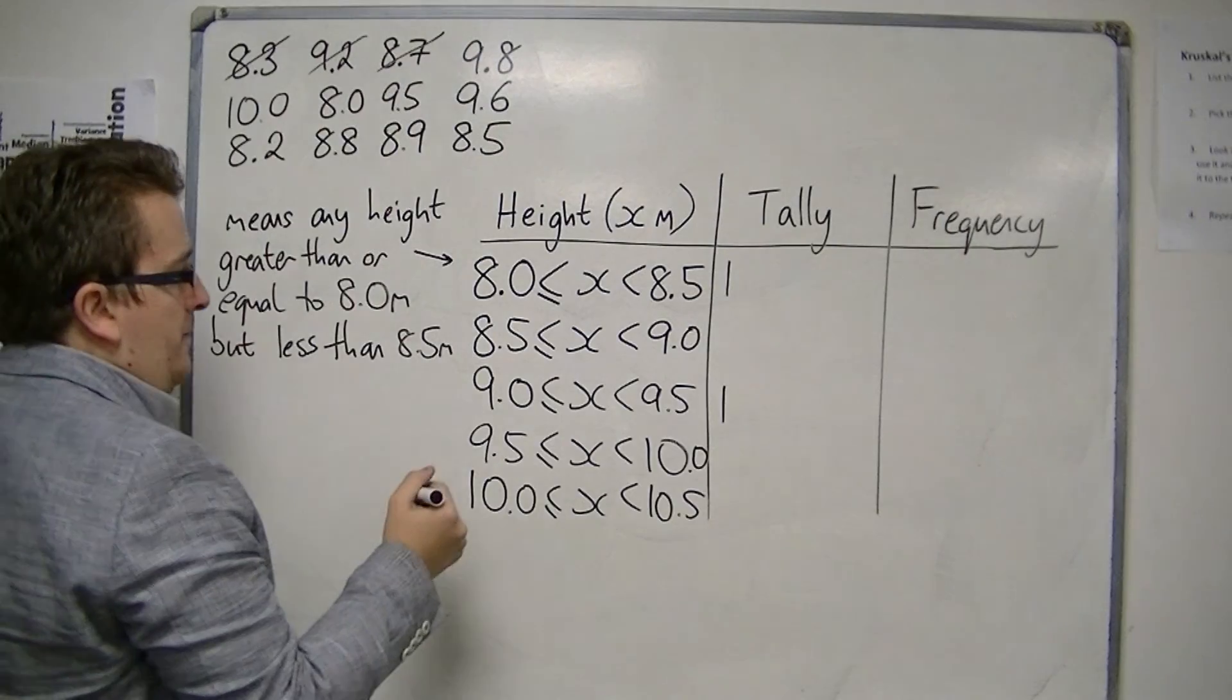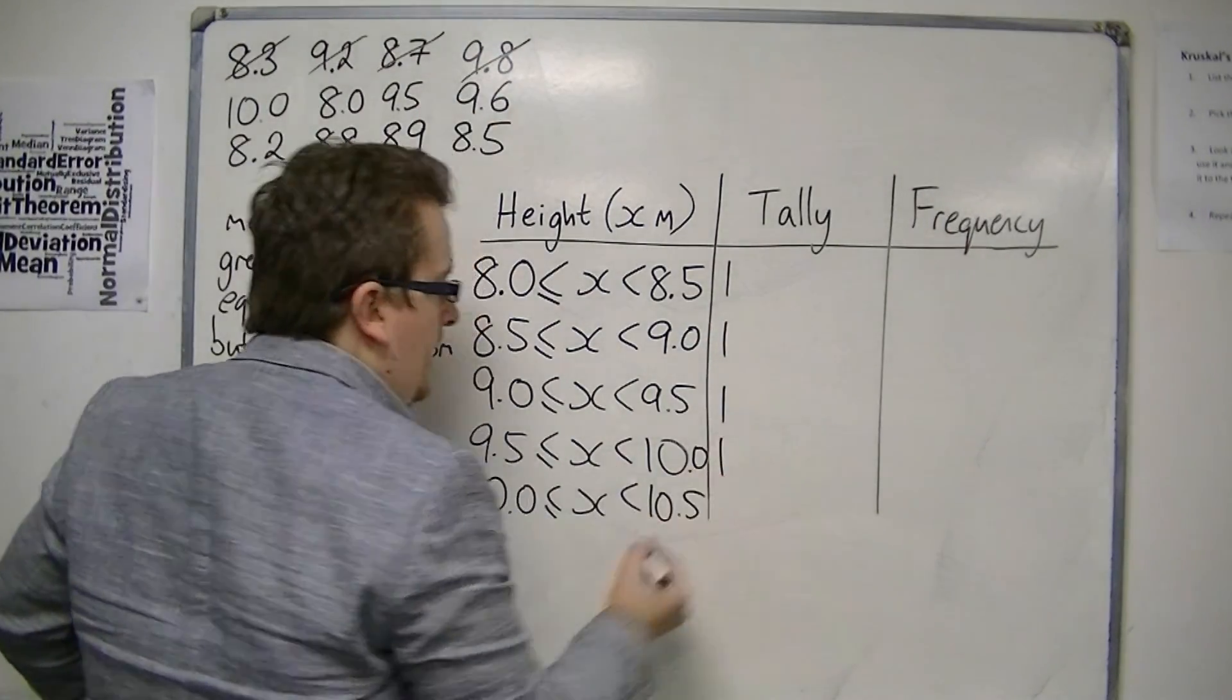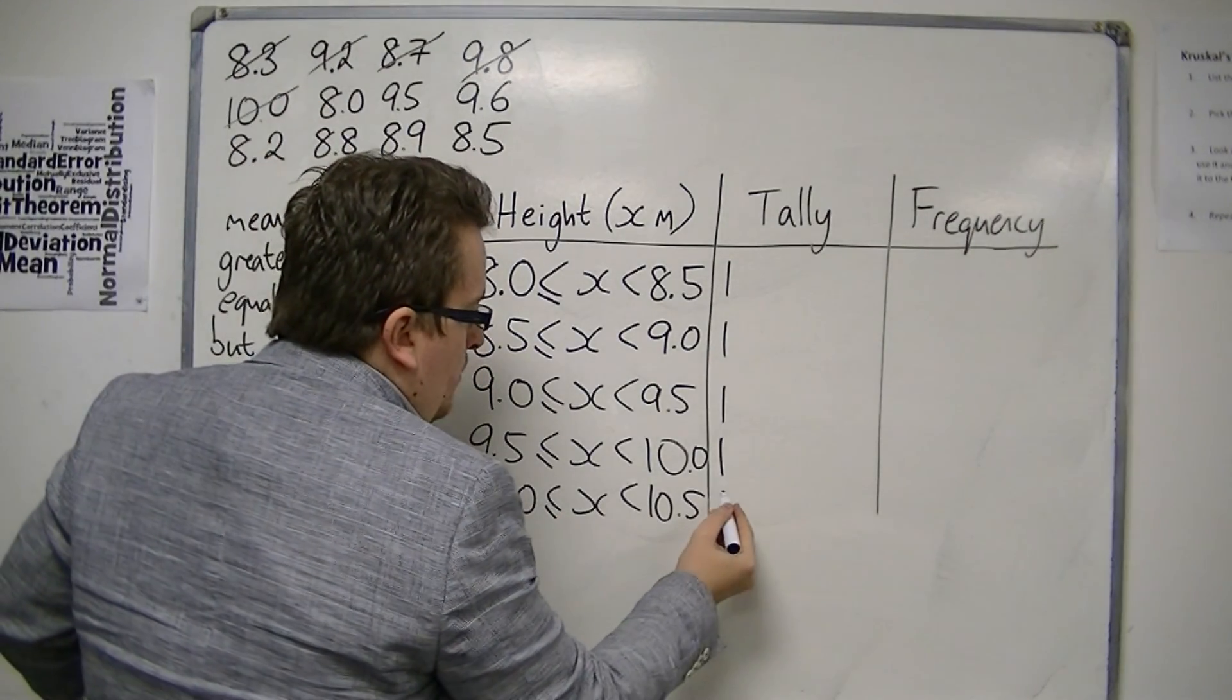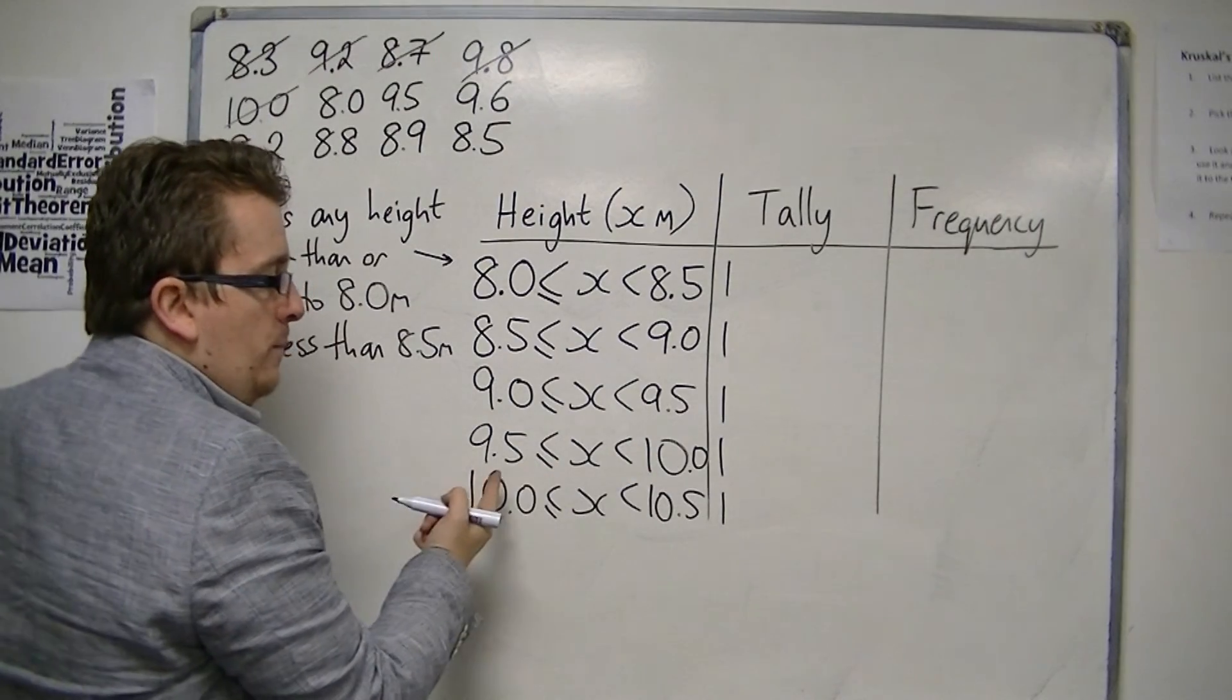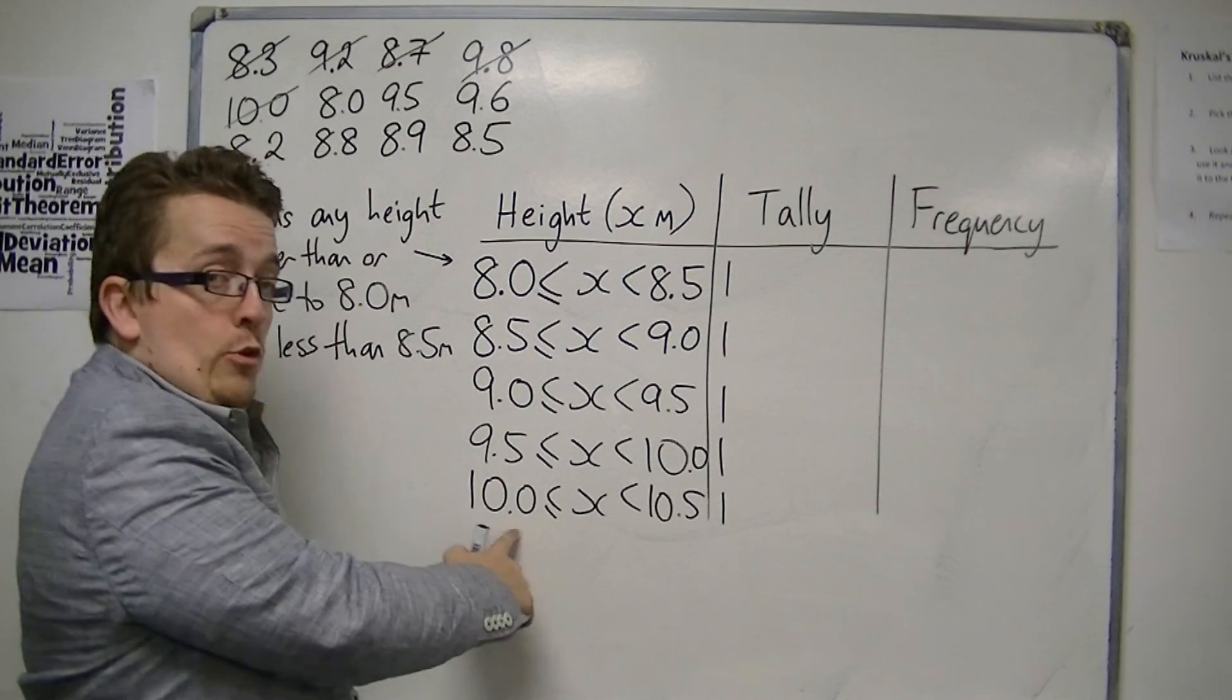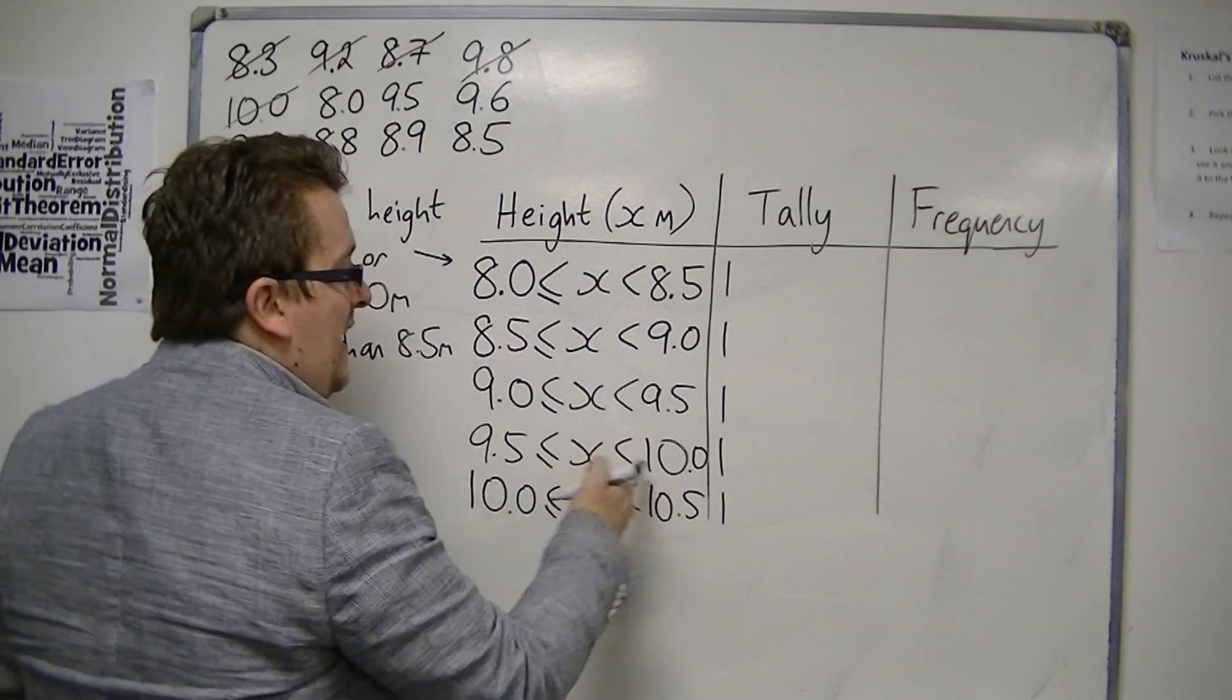8.7 would be in there. 9.8 would be in there. 10 would be in this group, rather than this group, because this is greater than or equal to 10, but less than 10.5. This group is less than 10.